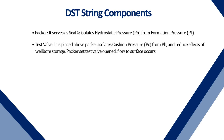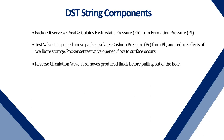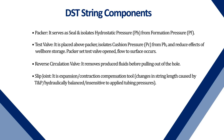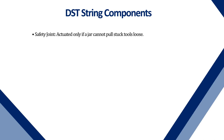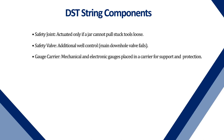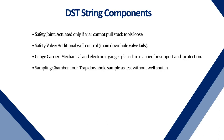When the packer is set and the test valve is opened, flow to surface occurs. Reverse circulation valve: it removes produced fluids before pulling out of the hole. Slip joint: it is an expansion or contraction compensation tool. Changes in string length caused by temperature and pressure are hydraulically balanced or insensitive to applied tubing pressures. Hydraulic jar: it transmits an upward shock to the tool string when the packer or lower assembly becomes stuck. Safety joint: actuated only if a jar cannot pull stuck tools loose. Safety valve: provides additional well control if the main downhole valve fails. Gauge carrier: mechanical and electronic gauges are placed in a carrier for support and protection. Sampling chamber tool: traps a downhole sample during the test without well shut-in.